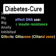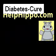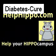Glitazone affects DNA use, so you're less insulin-resistant. Magical glitter changes your DNA for superpowers. Help Hippo — help your hippocampus.